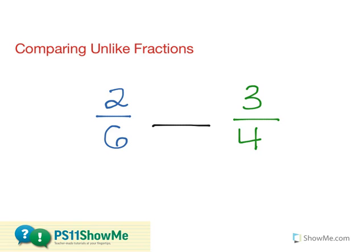The difference between like and unlike fractions is going to be the denominator, which is the number of total pieces out of the whole. In this case, I'm working with fourths in the fraction three-fourths, and sixths in the fraction two-sixths.